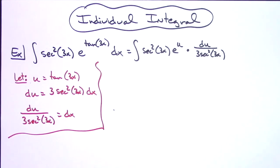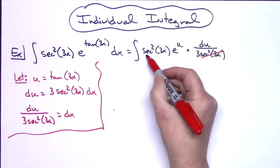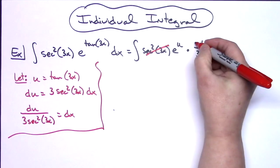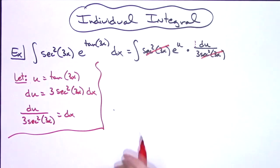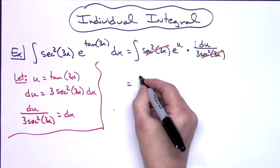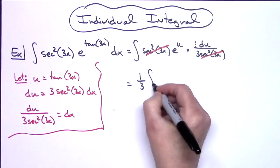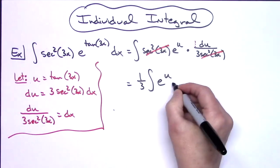From here we can see that those secant squareds of 3x are going to cross out, and then that's going to let me pull out a 1/3 out in front of this integral. So then I'll have the 1/3 out in front. I'll have an integral of e to the u du.